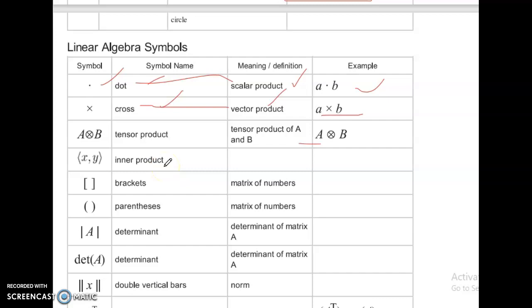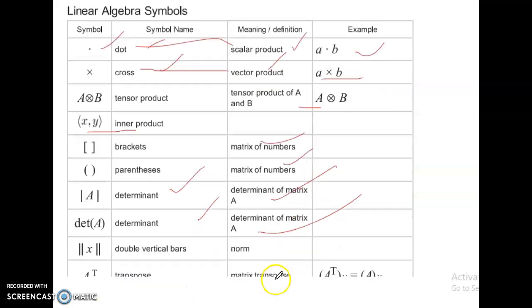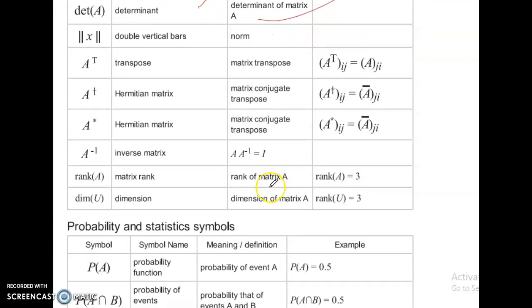Determinant of A matrix is double vertical bars. A transpose, matrix transpose. A power T base ij equal to Aji. This is the transpose of matrix.